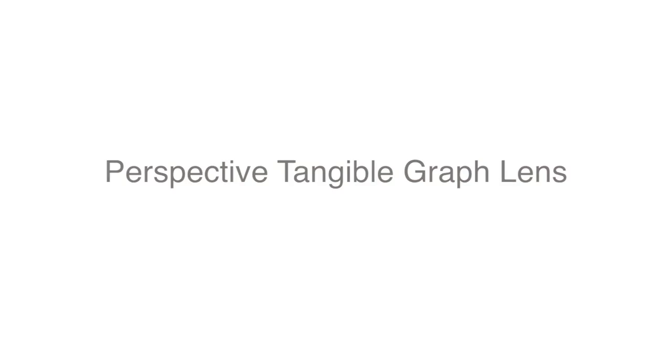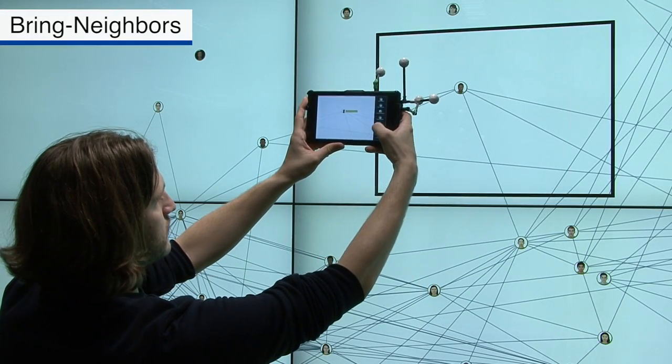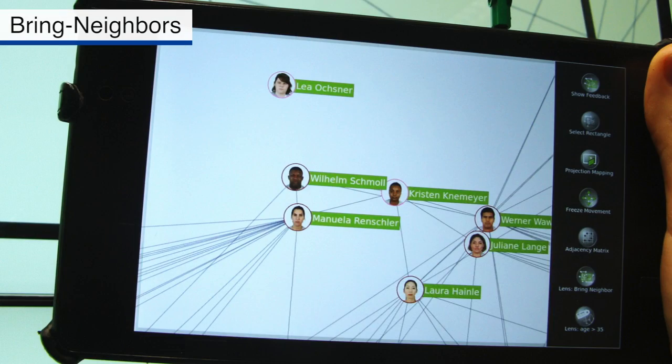Perspective tangible graph lens. We implemented a variation of the bring neighbors lens, pulling in the adjacent nodes.